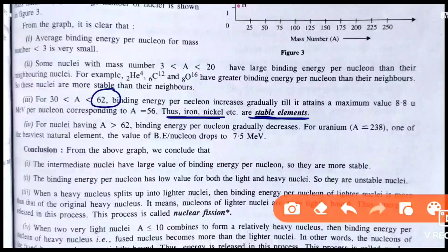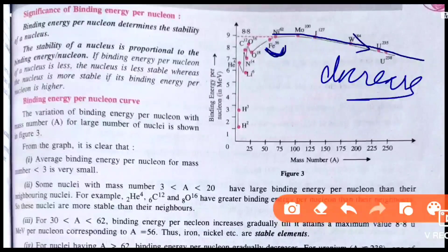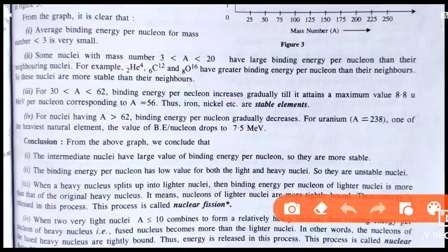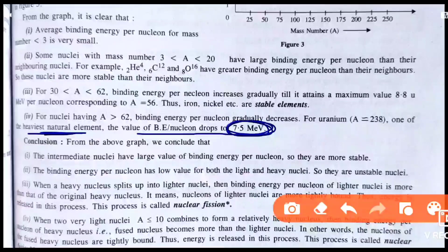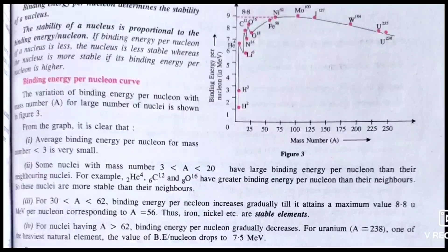Fourth: for nuclei with mass number greater than 62 — like 63, 64, 65, 67 and beyond — binding energy per nucleon gradually decreases instead of increasing. The curve goes downward. For uranium, one of the heaviest natural elements, the value of binding energy per nucleon drops to 7.5 MeV, compared to the maximum of 8.8 MeV.